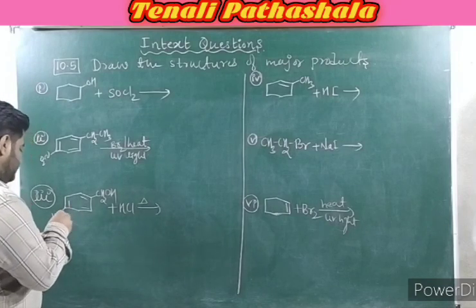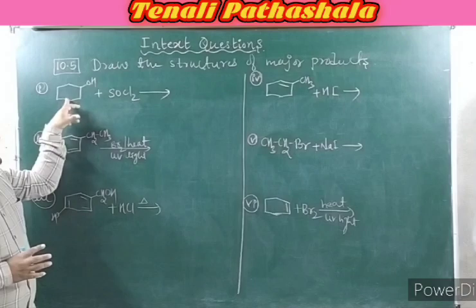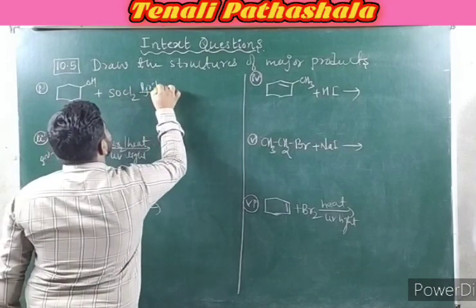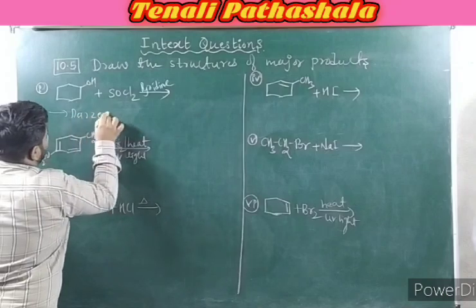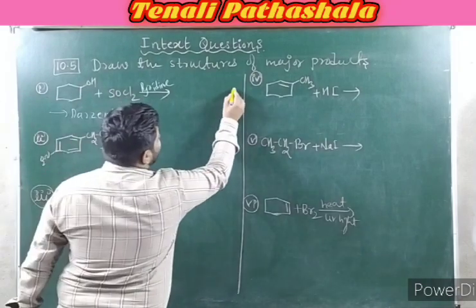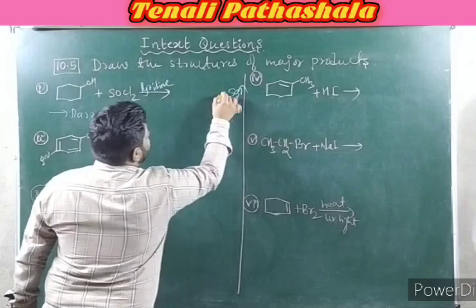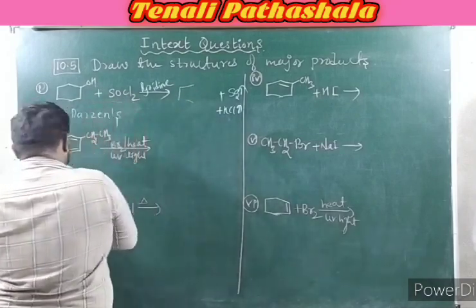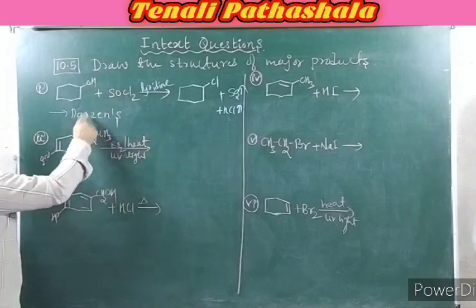This is the 10.5 question: draw the structures of the major products. First case: cyclohexanol with SOCl₂ in the presence of pyridine — this is Darzen's method (thionyl chloride method). SO takes the O and eliminates it as SO₂ gas, and one H and one Cl are eliminated as HCl gas. One Cl attaches where OH was. Wherever OH is present, you get Cl there. You will get chlorocyclohexane.